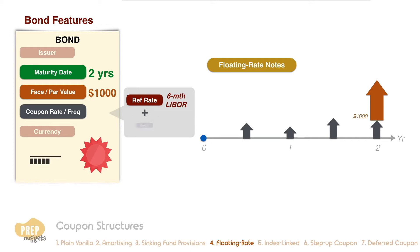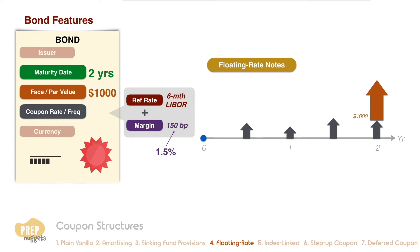An interest margin is usually added to compensate the lender for the credit risk that the lender undertakes. The added margin is typically expressed in basis points, which are hundredths of one percent. A 150 basis point margin is equivalent to 1.5 percent. So for this case, if the six-month LIBOR rate is 3.0 percent today, the coupon rate to be applied six months from now will be 4.5 percent.